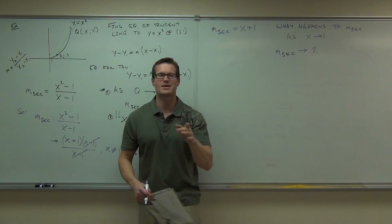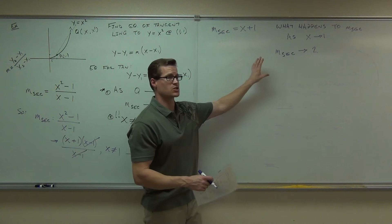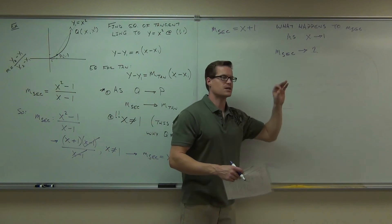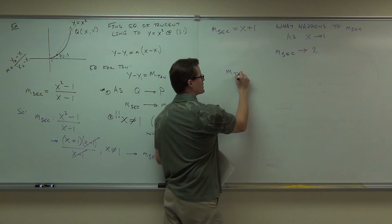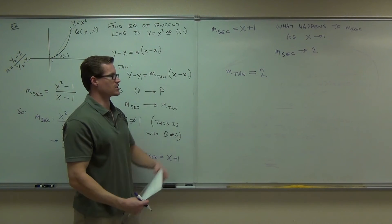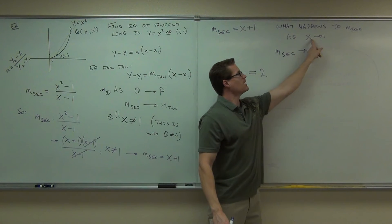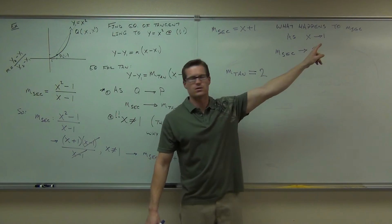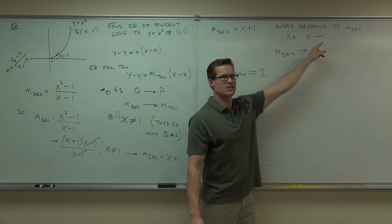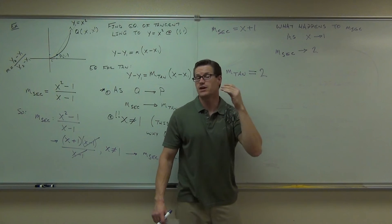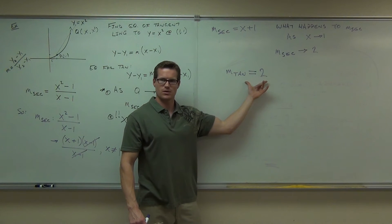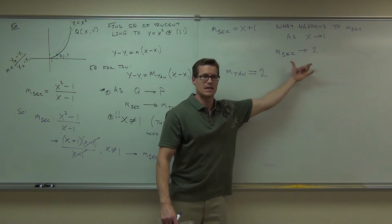Our secant should be really close to two. This lets us make the jump. This is a limiting position that says we know the limit of the slope of the secant line is two. What that means is that the slope of the tangent line actually is two. That's the jump. It says: if x gets really, really close to one, the secant line gets really, really close to two. I can't let x equal one, but I can make the jump that if I could let x equal one, the slope would be two. This is using limits to make the jump between a secant and a tangent.